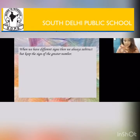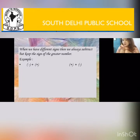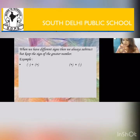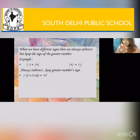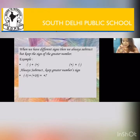When we have different signs, we always subtract but keep the sign of the greater number. When you have to add two integers with different signs — for example, minus and plus in the bracket — you'll always subtract but keep the sign of the greater value. Also note: if there is no sign shown, it means it is a positive integer.